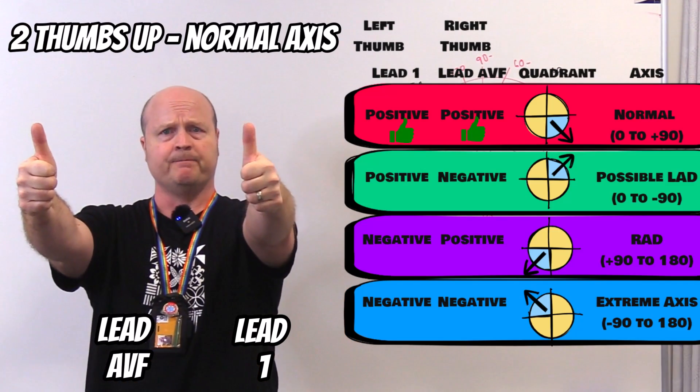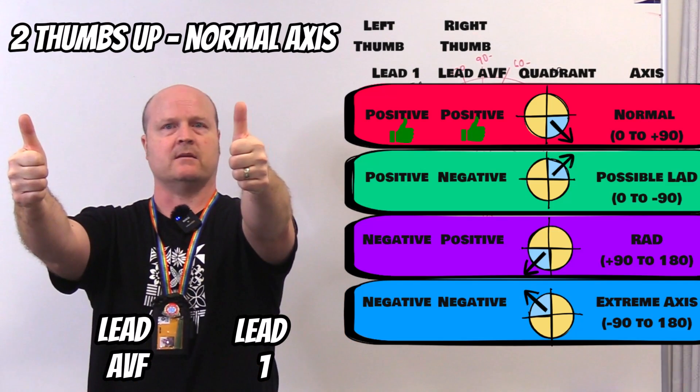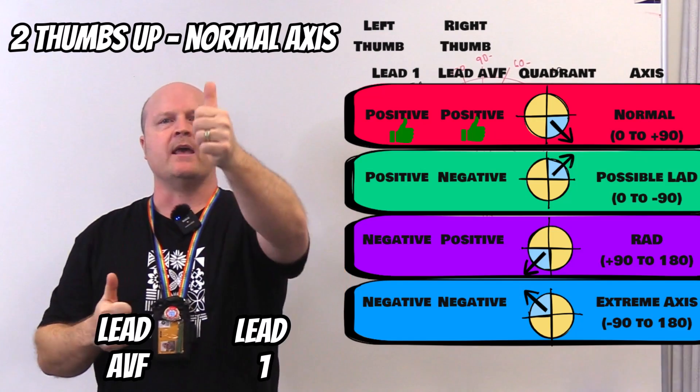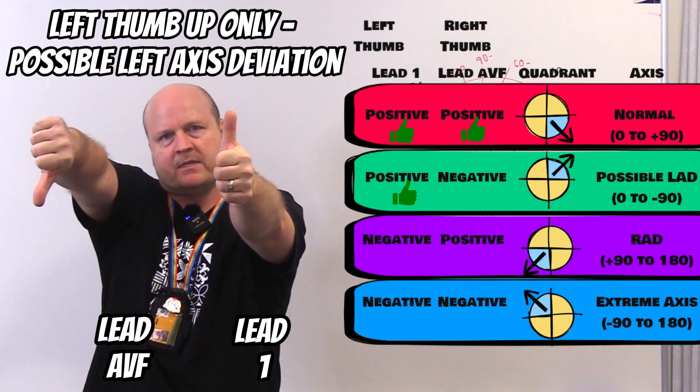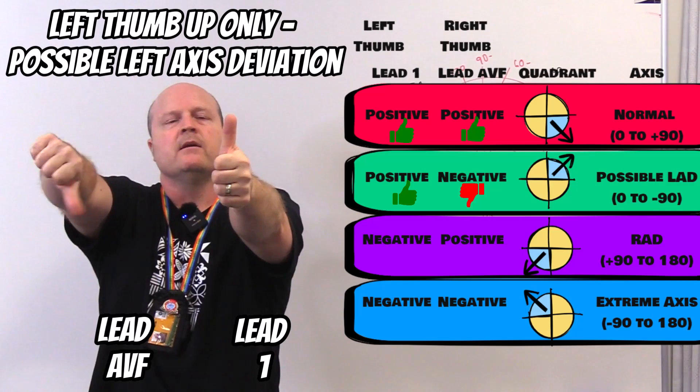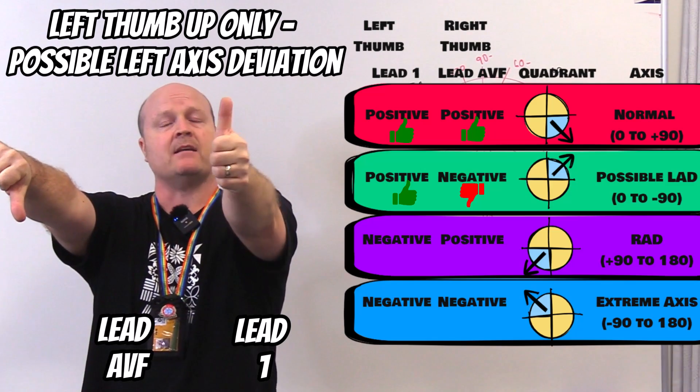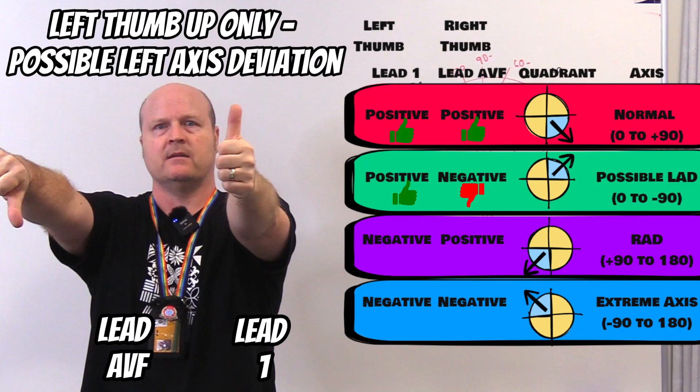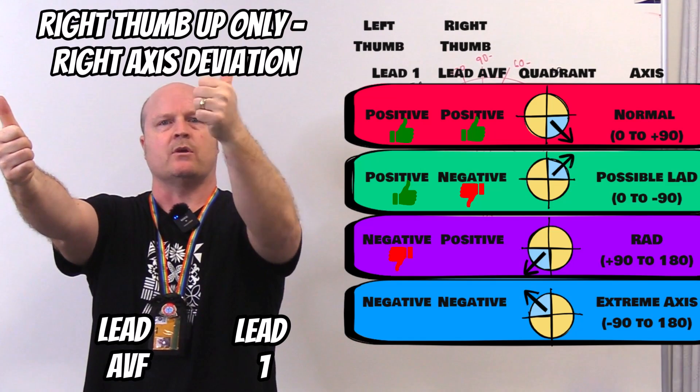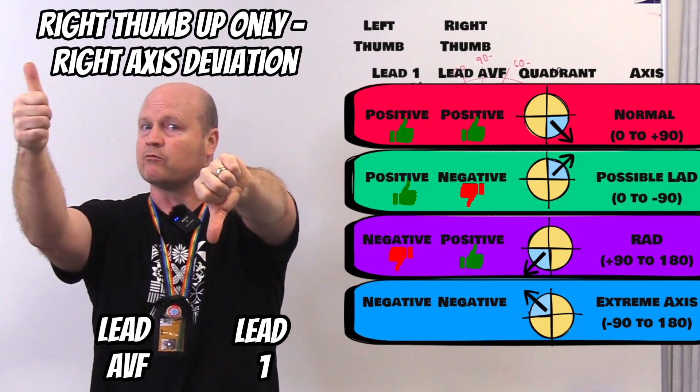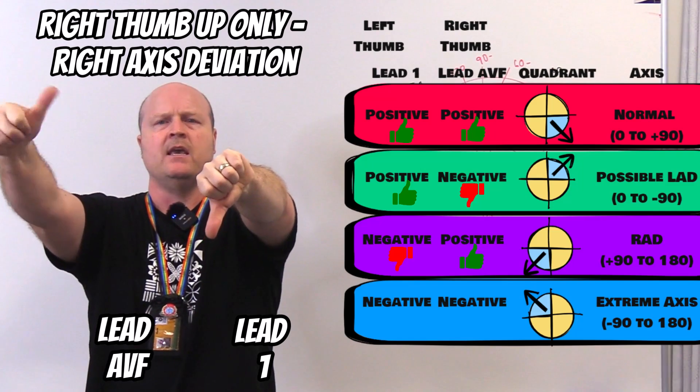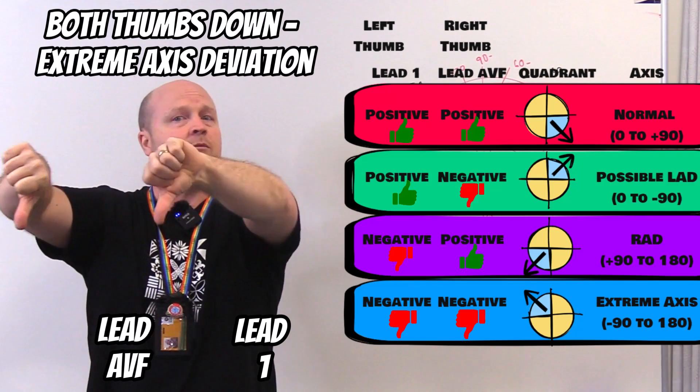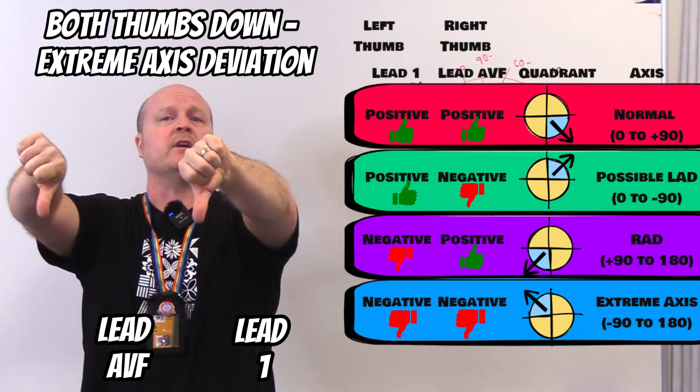So if we've got two thumbs up, this is going to be a normal axis. If we've got our left thumb up, right thumb down, then this left one, we've got left axis deviation possibly. If it's the other way, so left down, right up, we've got right axis deviation. And if they're both down, either we put our leads on wrong or we've got extreme axis.